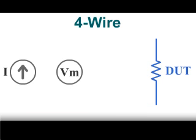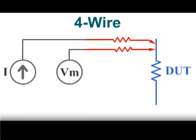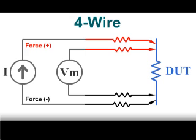With 4-wire or Kelvin testing, two wires go to each side of the wire being measured. One is the current force wire, the other voltage measure or sense wire.